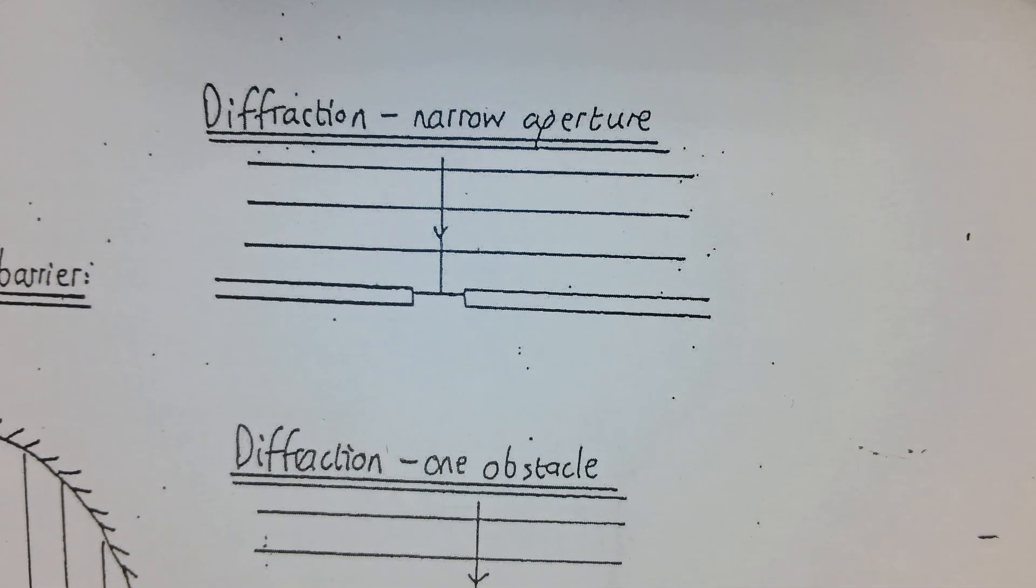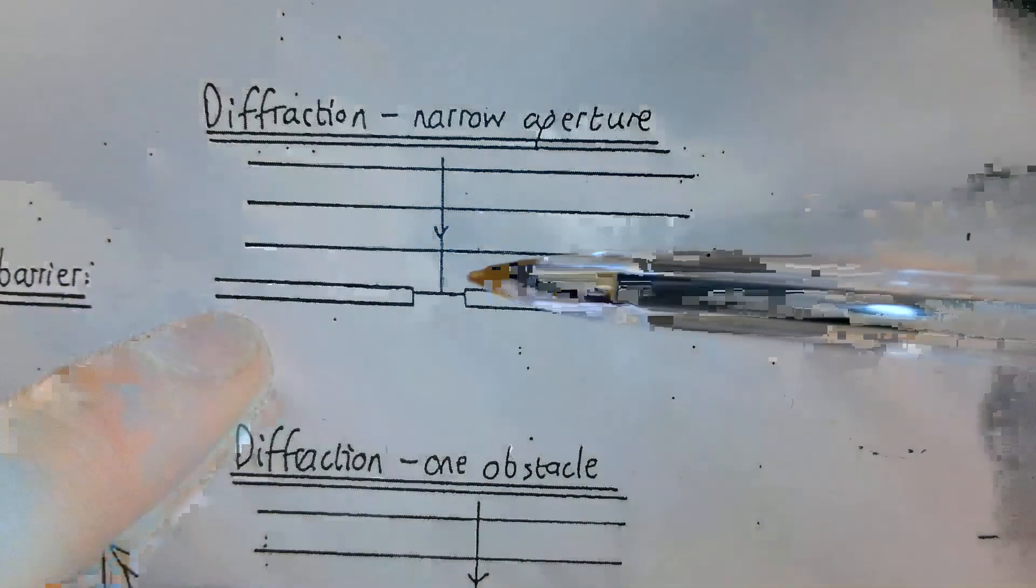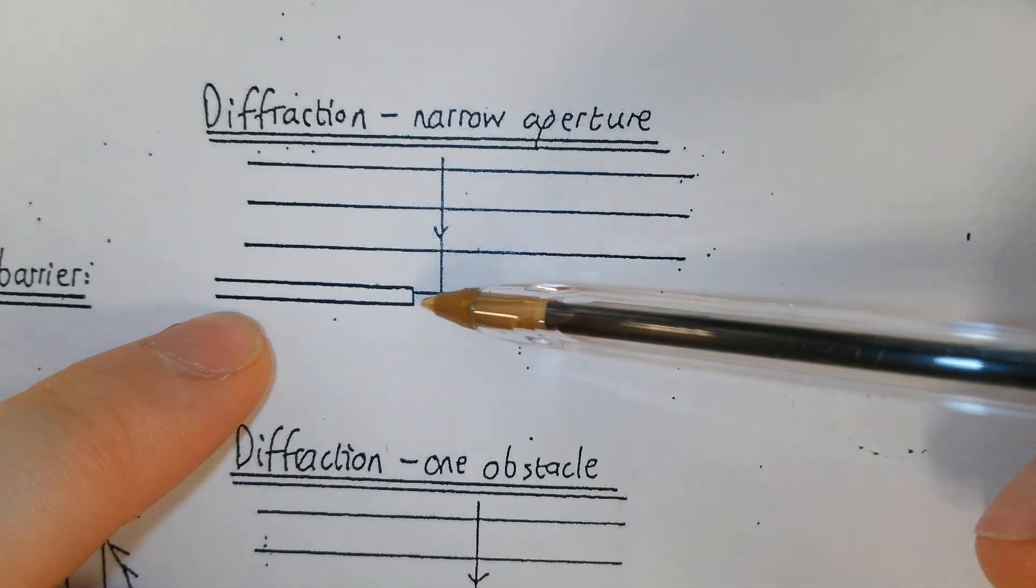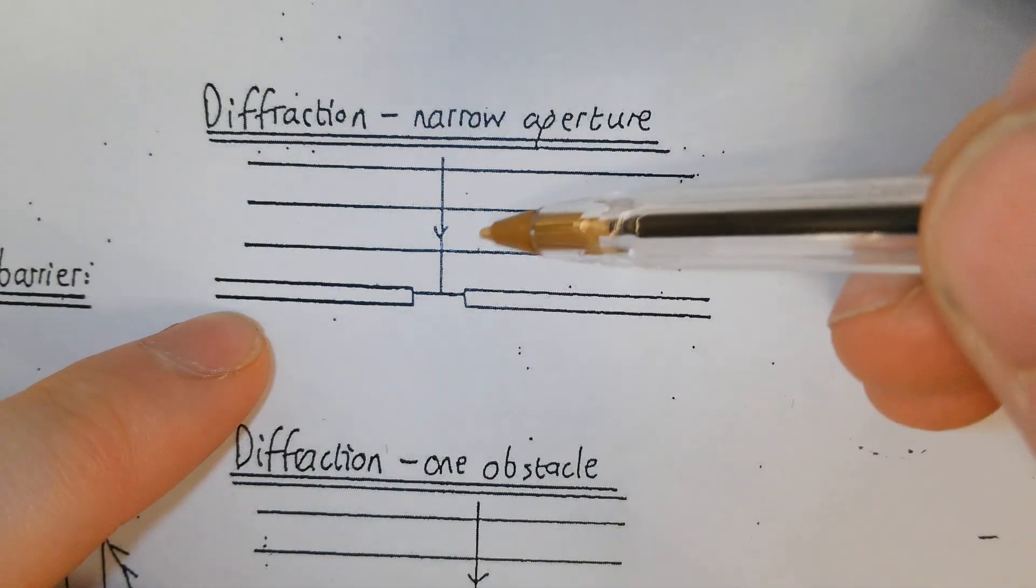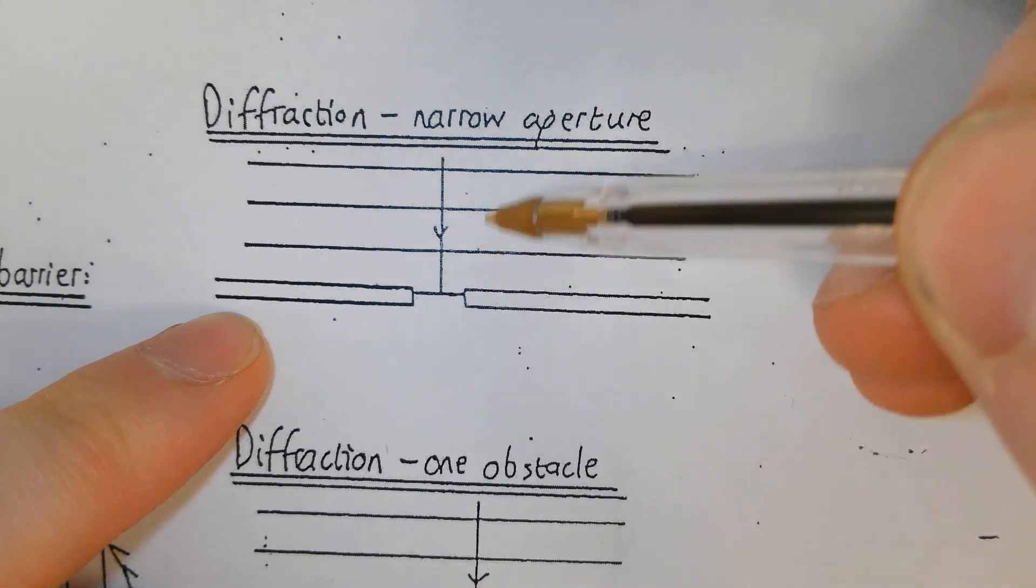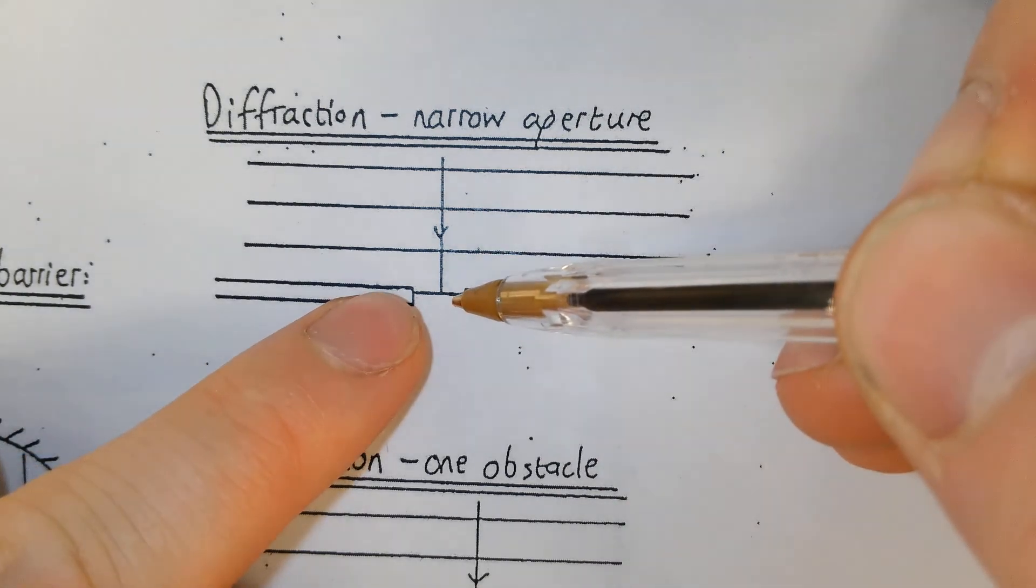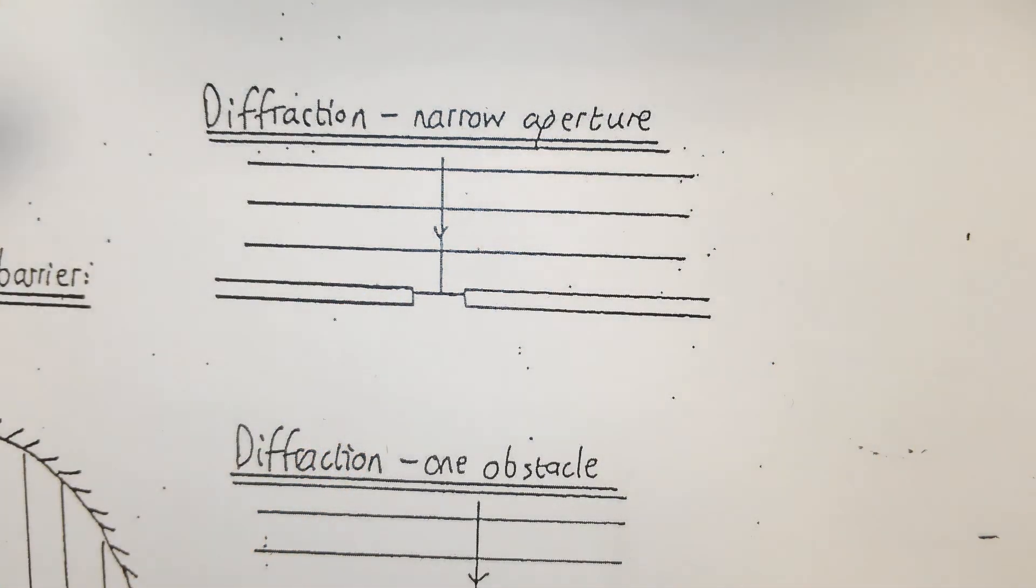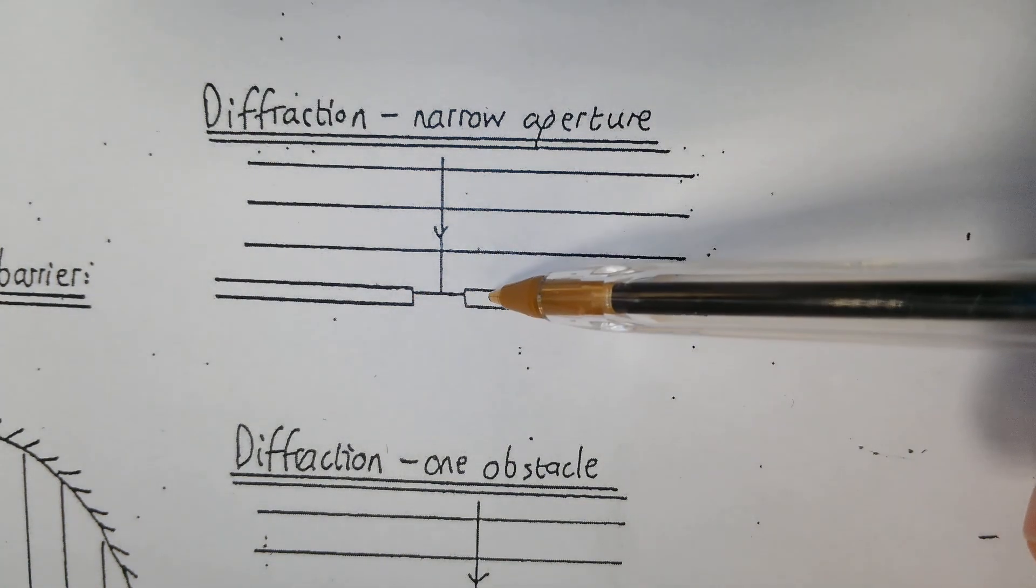Okay, so our last diagram is diffraction through the narrow aperture. The narrow aperture means your gap size here is the same size as the wavelength. If it was smaller than the wavelength, the waves wouldn't go through, and if it's bigger you would get wide aperture diffraction. So here same size, which means you get maximum diffraction.